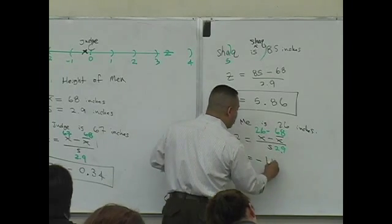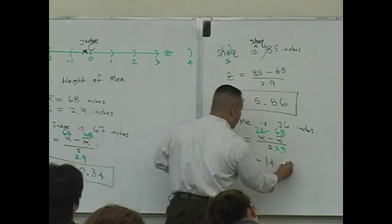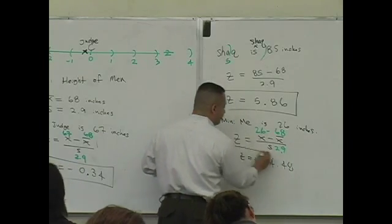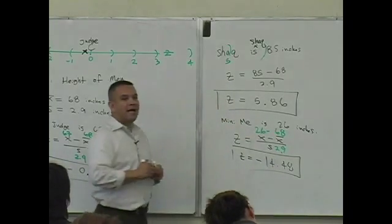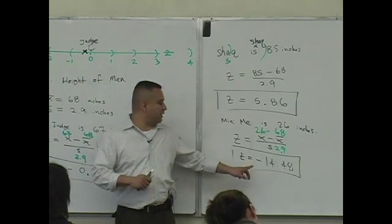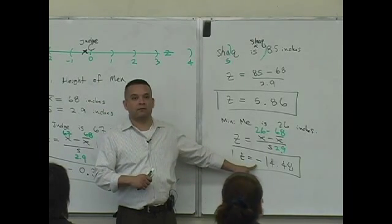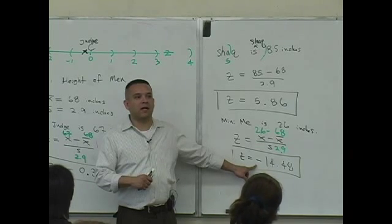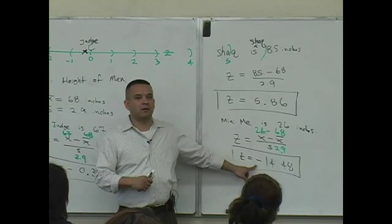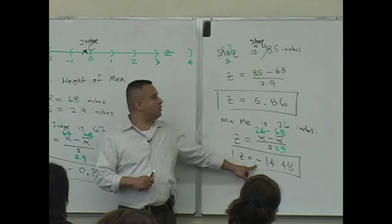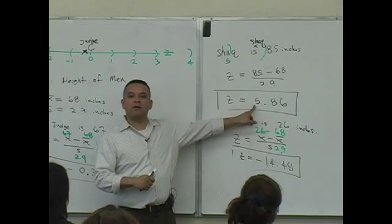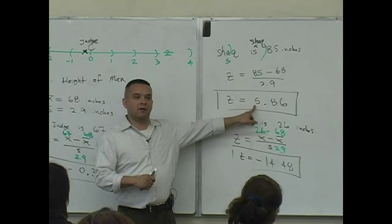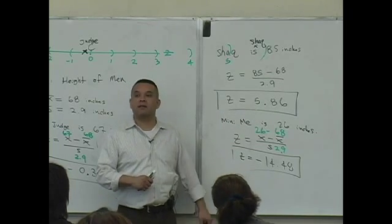You're using the Z formula here. Negative 14.48. What does that mean? First of all, it's negative, so that means what? What does the negative sign mean? Let's think about this. Shaq has a positive value. What does that mean? Mini-Me has a negative value. What does that mean?